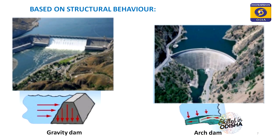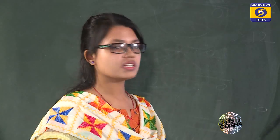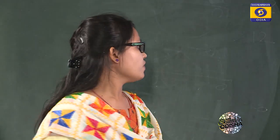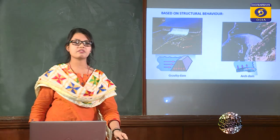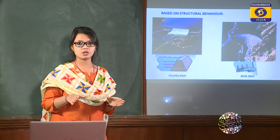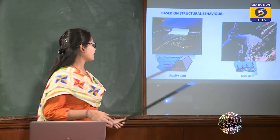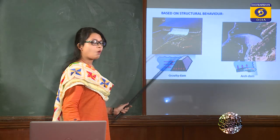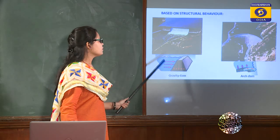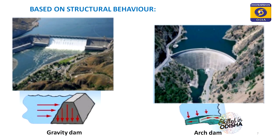Based upon structural behavior — that is how the body of the dam resists external forces — the first type is the gravity dam. A gravity dam resists all the external forces acting on it due to its self-weight only. The external forces and how they are resisted will be explained in the next lecture session, as this is another section of this chapter.